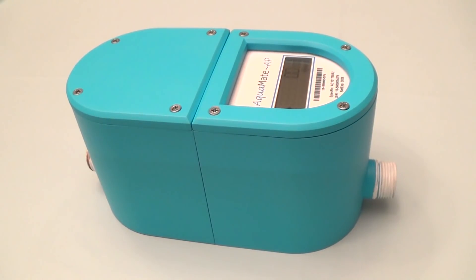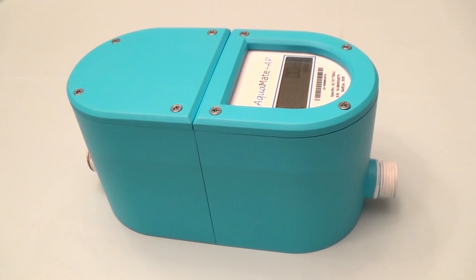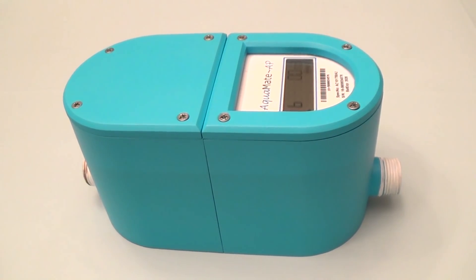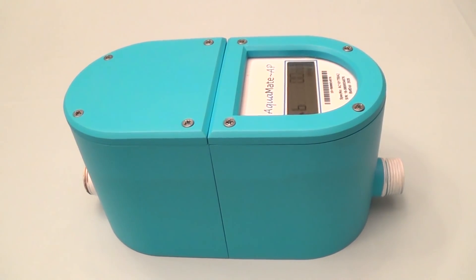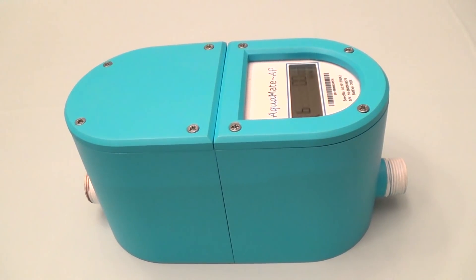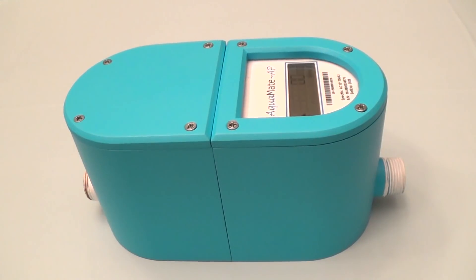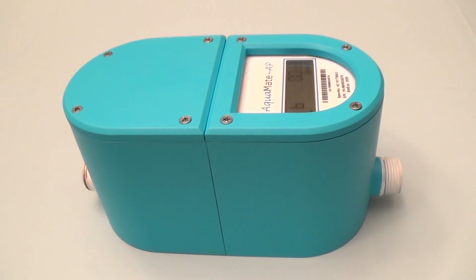Hi, today I'd like to introduce our smart water meter Aquamate AP. AP stands for Advanced Pay and this model is equipped with a motorized shut-off valve. That is, you pay for the water you need as you go.